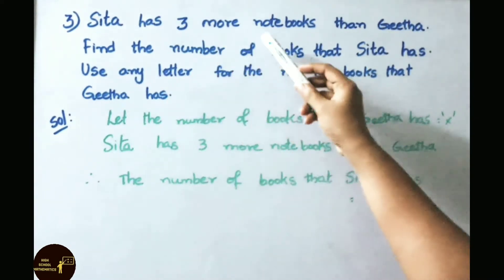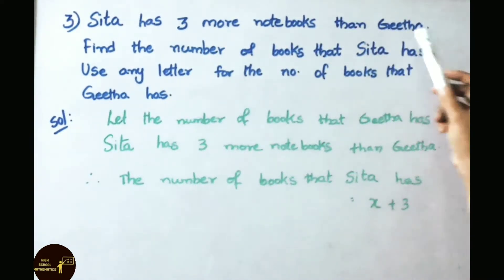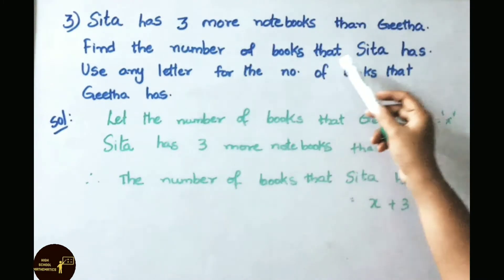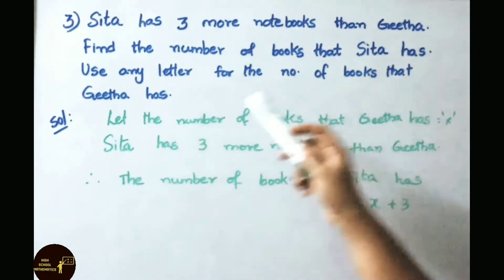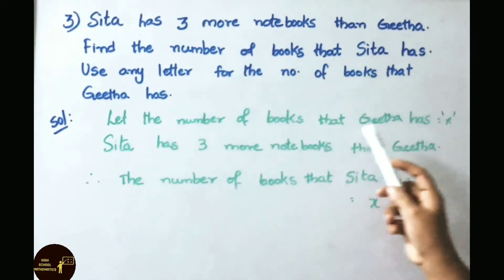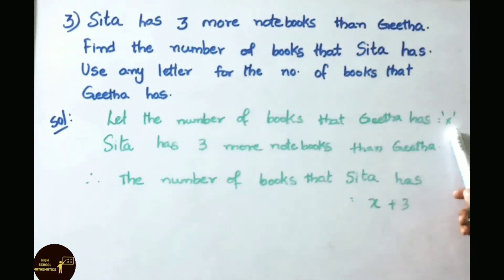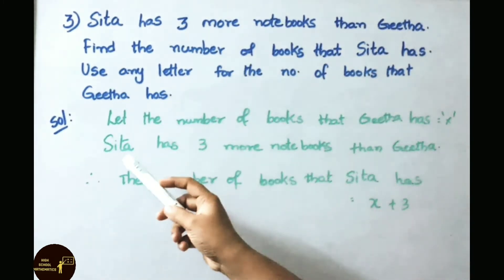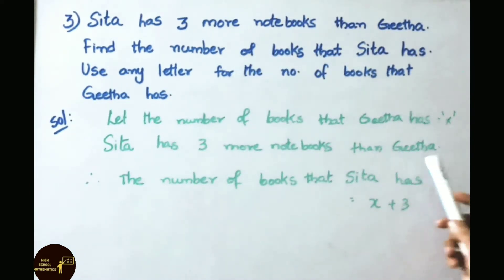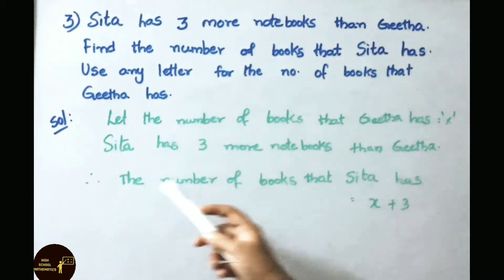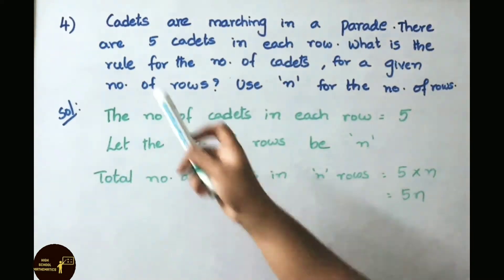See now question number 3. Sita has 3 more notebooks than Gita. Find the number of books that Sita has. Use any letter for the number of books that Gita has. Let the number of books that Gita has equal X. Sita has 3 more notebooks than Gita, so the number of books that Sita has equals X plus 3.